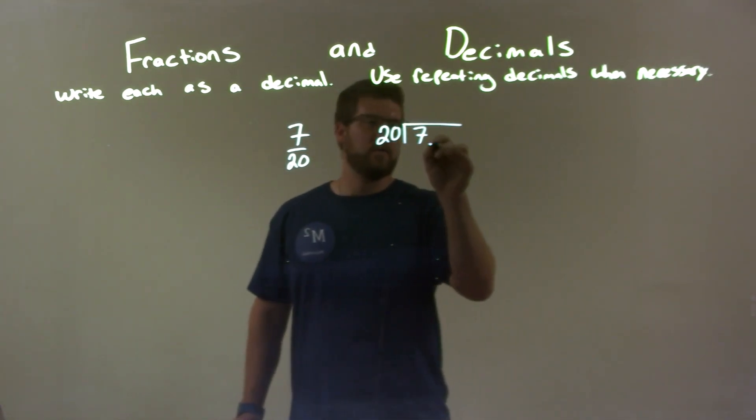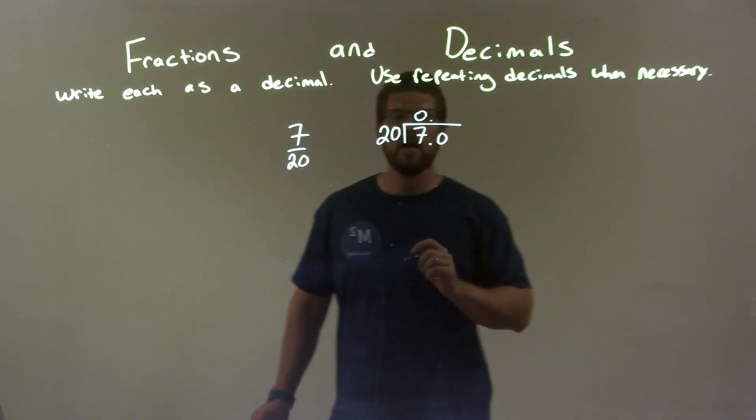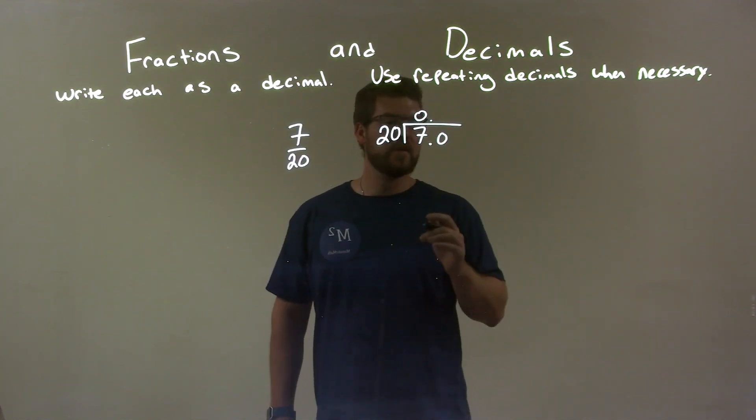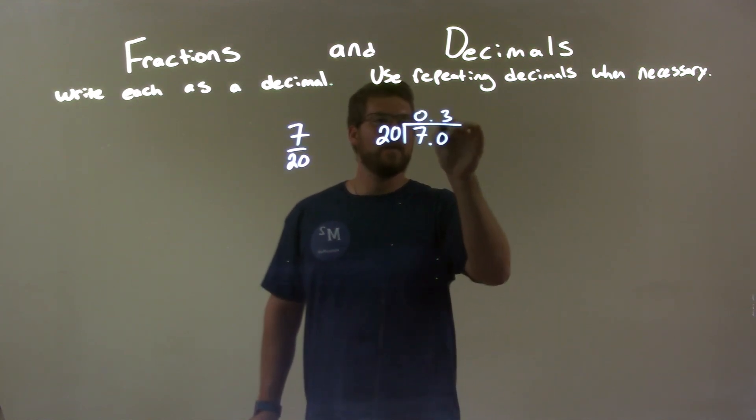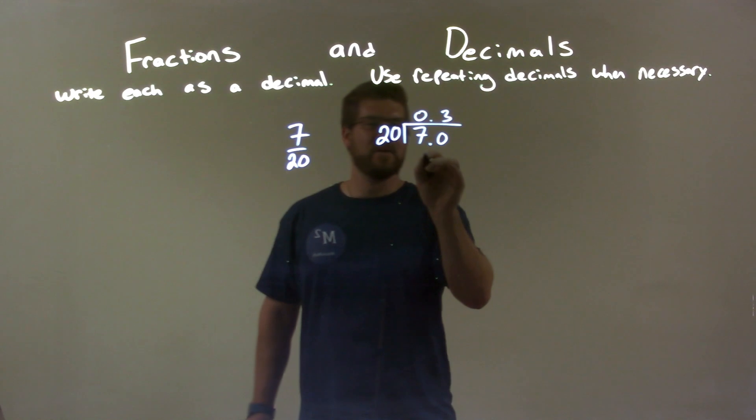Well, 20 doesn't go into 7, so we add a 0. 20 can get closer to 70, and that would be 3 times, which is 60. 3 times 20 is 60.